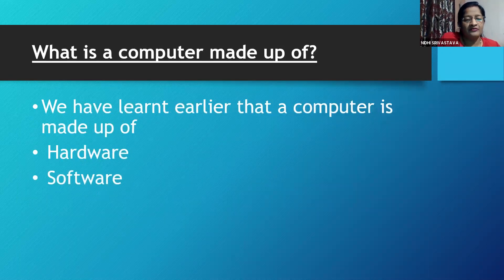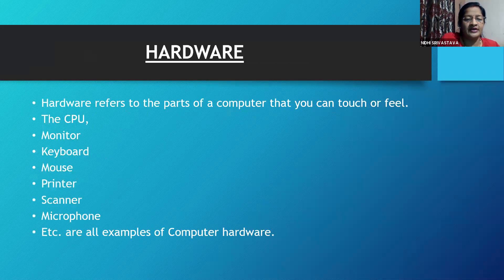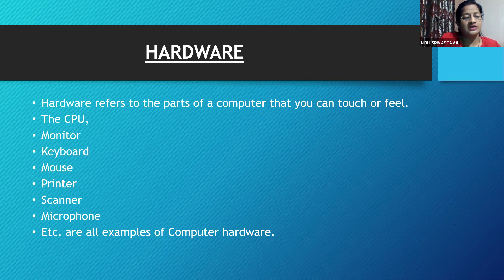What is a computer made up of? We have learned earlier that a computer is made up of hardware and software. So what is hardware? Hardware refers to the parts of a computer that you can touch or feel. Examples are the CPU, monitor, keyboard, mouse, printer, scanner, microphone, etc. — all examples of computer hardware.